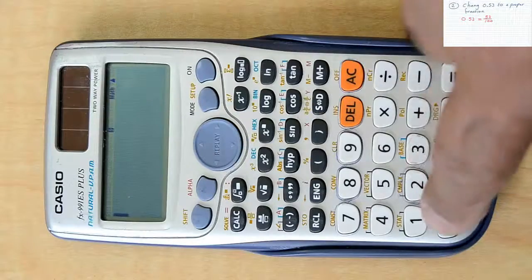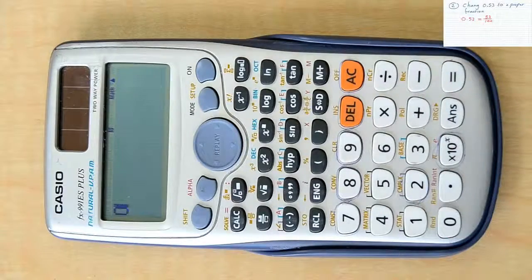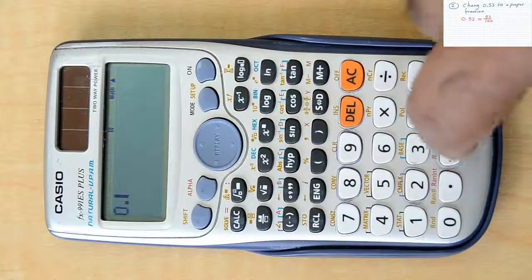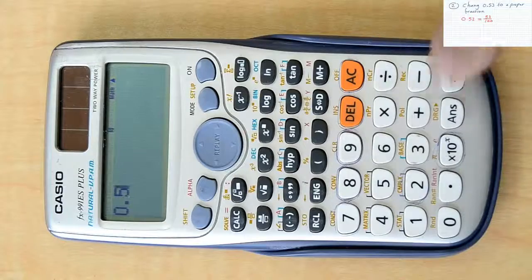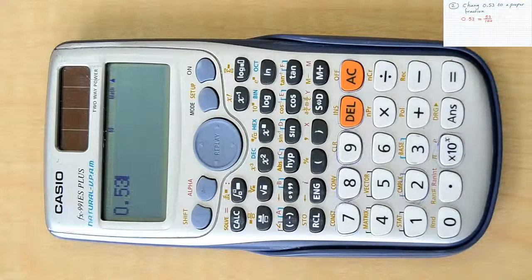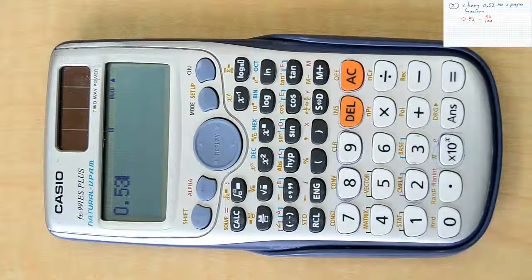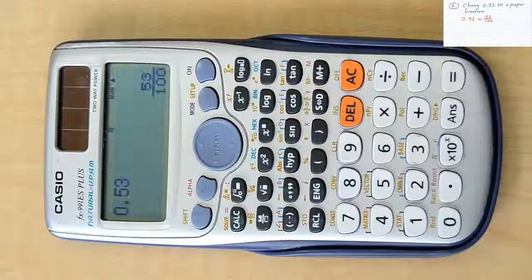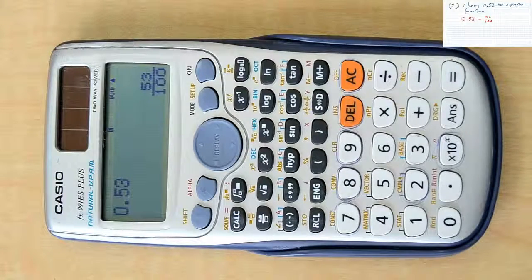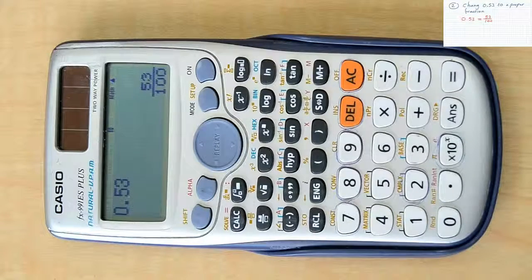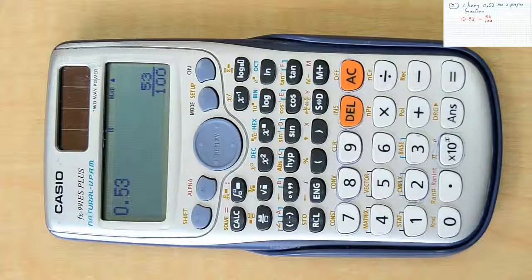To find it using the calculator, you just insert 0.53 to your calculator. And then press equal. Directly, it will be given to you as a fraction 53 over 100.